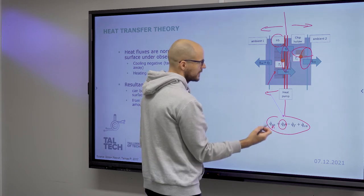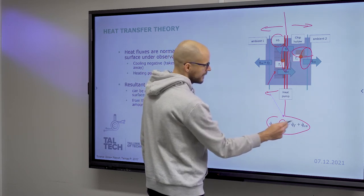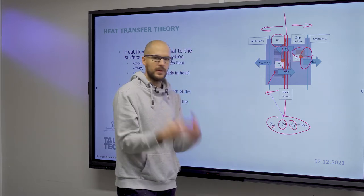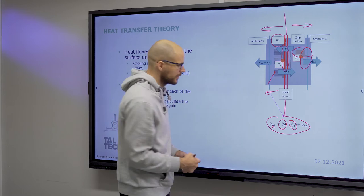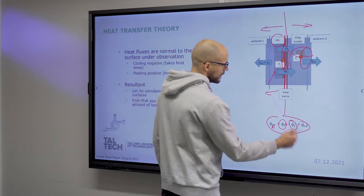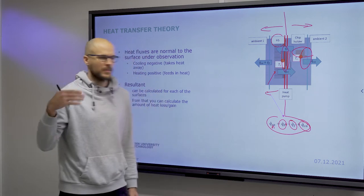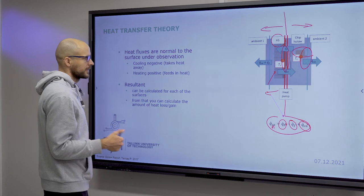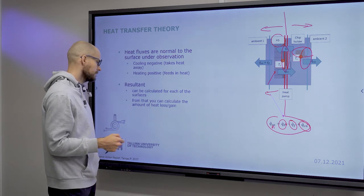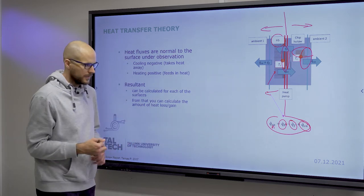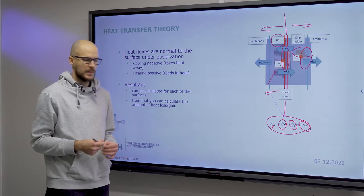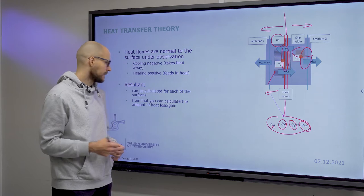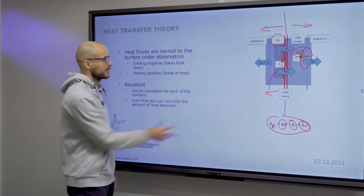This is a fan, so we have a fan on the heat sink that would dissipate some of the heat. Some of the heat will also be communicated to the ambient. Those are the heat fluxes in this system. If you calculate the resultant heat fluxes, then you can calculate the amount of heat loss or heat gain in your system.